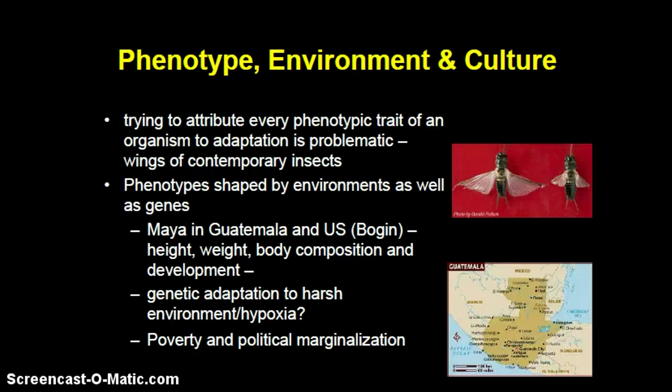Trying to reduce every phenotypic trait of an organism to adaptation is problematic. For example, the wings of contemporary insects initially started off as cooling buds, which would not have allowed for flight, but over the course of evolution developed into functional wings. This is the notion of exaptation. Phenotypes are also shaped by environments as well as genes. There was a notion that the Maya of Guatemala were a pygmy people. Barry Bogin conducted anthropometric measurements of height, weight, body composition, and development, questioning whether this was a genetic adaptation to harsh environment or hypoxia. What he found instead was that when these populations came to the United States, there was increased development along all measures of anthropometry — increase in stature, growth, body composition, height, and weight.